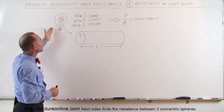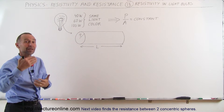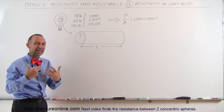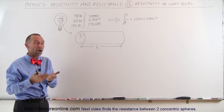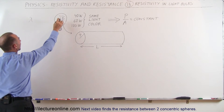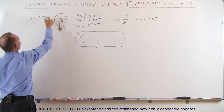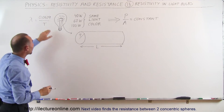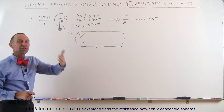Light bulbs come in different power ratings: 40 watts, 60 watts, 100 watts are very typical. That's the amount of joules per second they utilize to put out light. The way they work is they use Wien's law, which predicts that the wavelength of radiation coming from an object is equal to 0.0029 divided by the temperature in Kelvin. So if you put out a high enough temperature, the radiation coming from that wire will eventually become visible light.